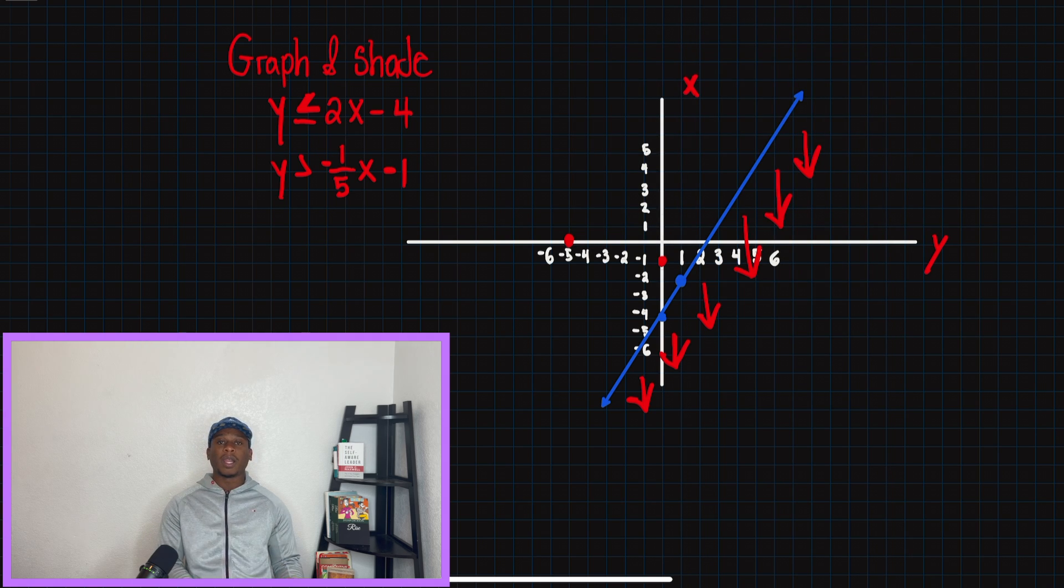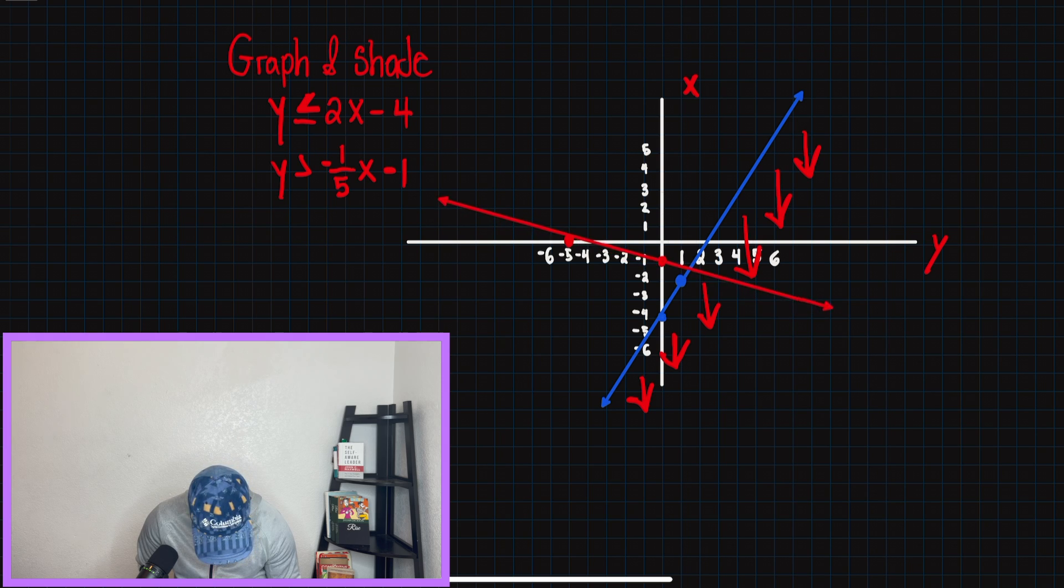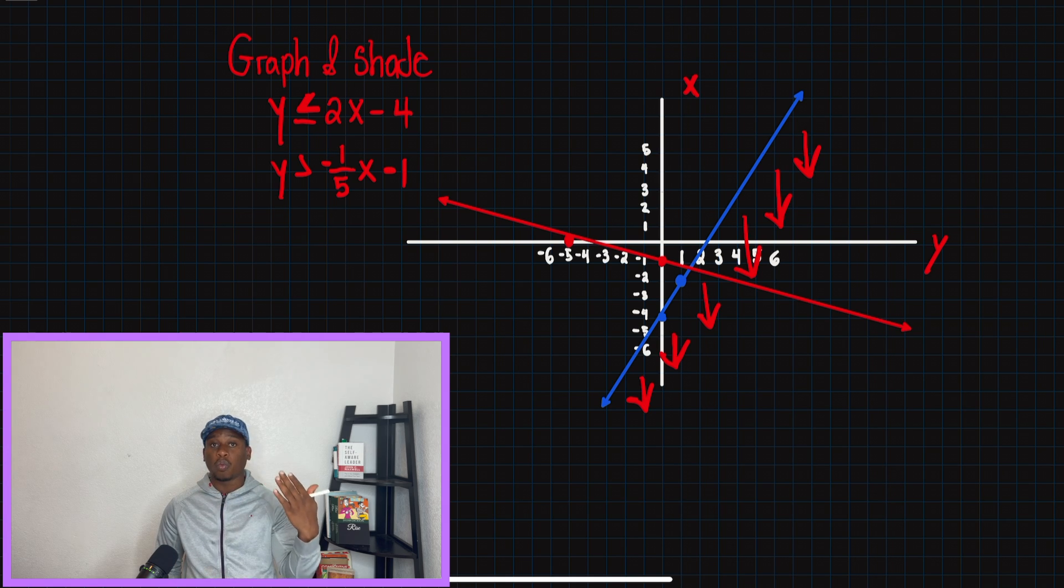And now we're going to draw a line through both those points and let's see what the system is going to look like. So I drew my line now. And now we need to start thinking, where do we shade for this problem?